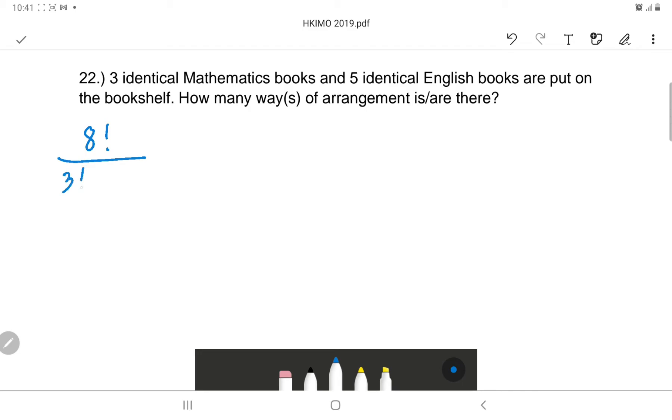you divide by three factorial, and then five English books, so five factorial. So eight factorial, that is eight times seven times six times five factorial. You stop at five so that you can cancel it with five factorial in...